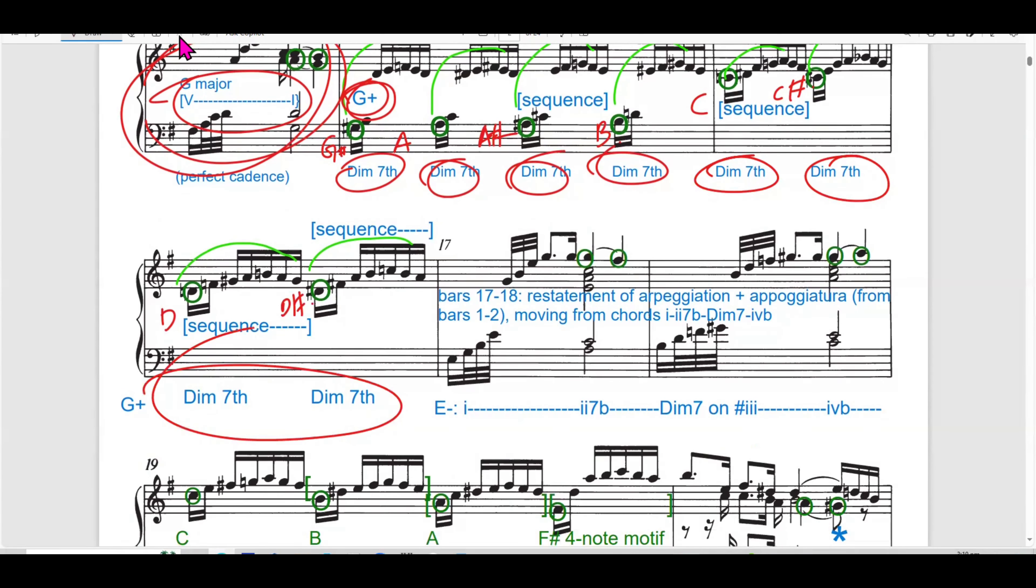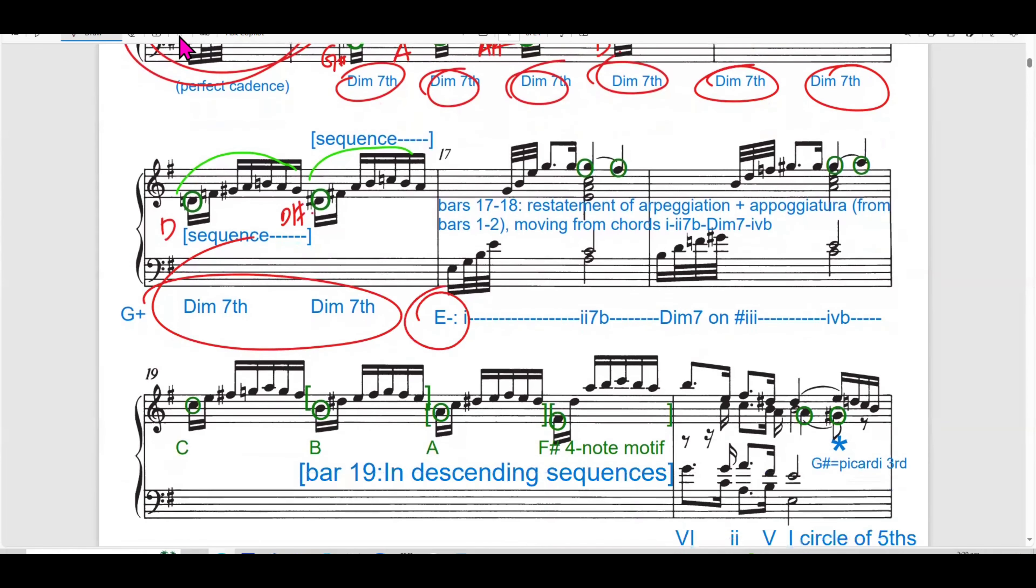G, forming an ascending chromatic line in bar 15 to 16, which is G, G-sharp, A, A-sharp, B, C, C-sharp, B, and B-sharp. This line adds tension and chromatic color, leading back to the tonic.